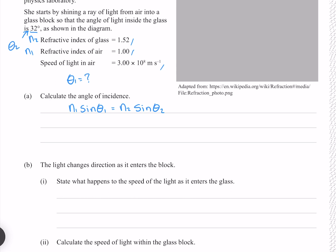Solving this equation for θ1, dividing both sides by n1, and now taking the inverse sine of both sides. Putting our numbers in. Which gives me 54 degrees to two significant figures.